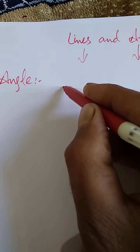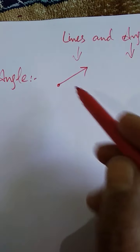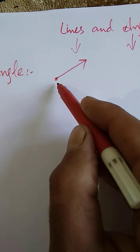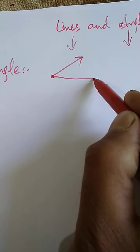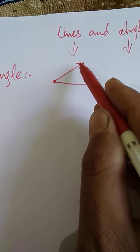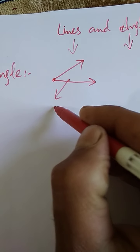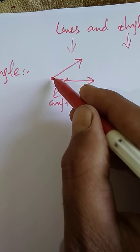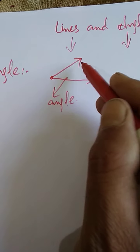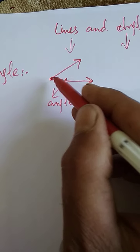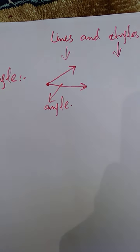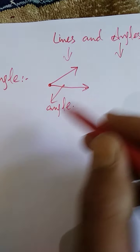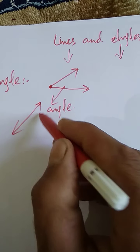First of all I will show you the figure. This is called a ray, and this is the initial point of the ray. From the same initial point, if I draw another ray, the figure formed by these two rays is called an angle. So an angle is the geometrical figure which is formed by two rays drawn from the same initial point.